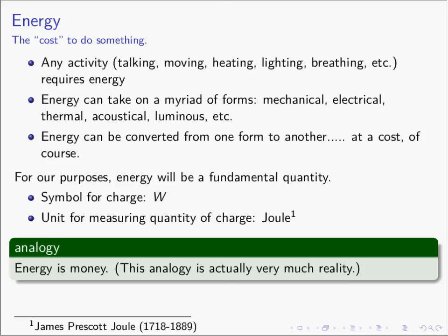For our purposes, energy is a fundamental quantity. The symbol for energy is going to be W — tipping a hat to the mechanical engineers who call energy work. We will use W as the symbol or variable for energy. The unit of measure from the SI system for measuring energy is the Joule, named after James Prescott Joule, an English scientist and also a brewer. There is the Joule brewery in England.